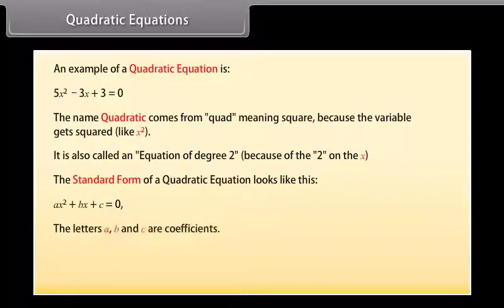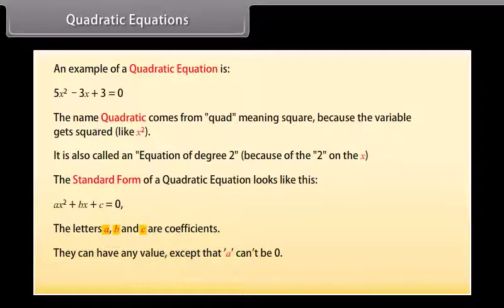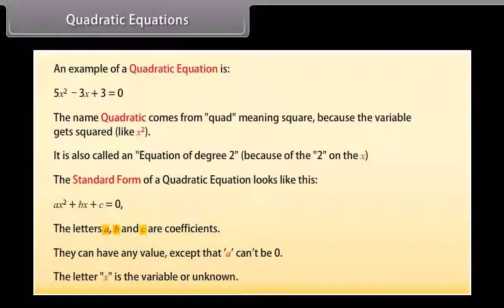The letters a, b, and c are coefficients. They can have any value, except that a cannot be zero. The letter x is the variable or unknown.